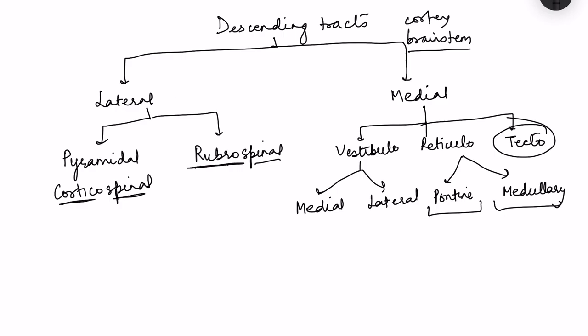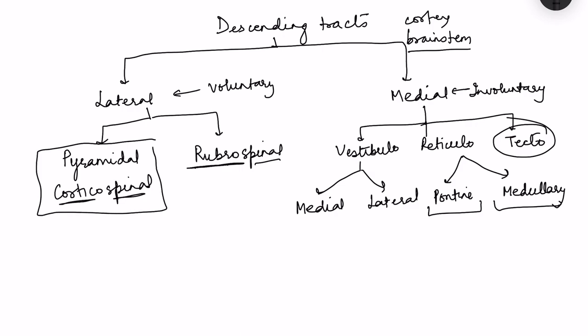Lateral descending tracts are for voluntary control of movement and medial ones are for involuntary control. The other classification is pyramidal and extrapyramidal tracts. The corticospinal tract is also known as the pyramidal tract and is the only tract arising from the cortex. All the others arise from the brain stem and are known as extrapyramidal tracts.